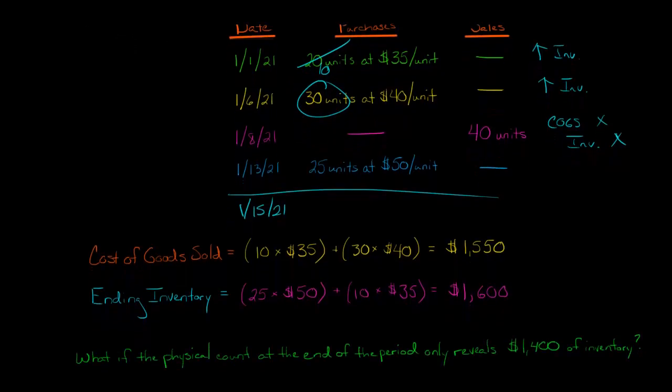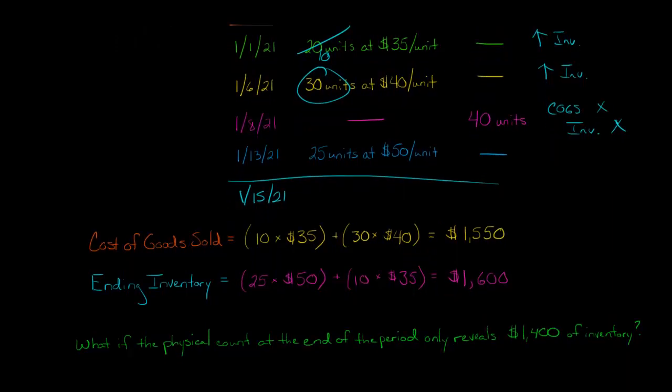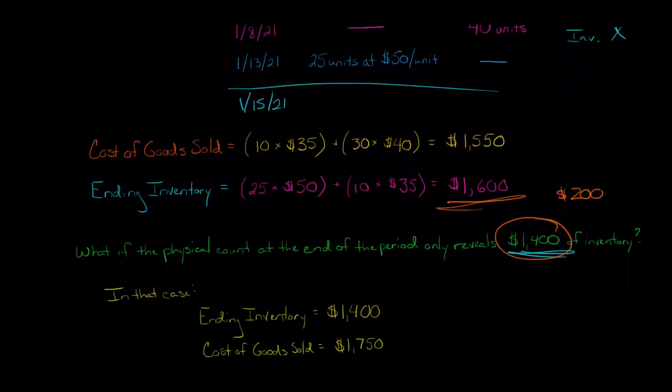So now you might have a question. You might say, well, what if we do a physical count at the end of this reporting period and we do the physical count and it only shows $1,400 of inventory? Right. We can't maybe some inventory was stolen or become damaged or we just lost it or something like that. So we only have $1,400 of inventory. Then if that were the case, then clearly our ending inventory would be overstated by $200. And so what we would do, companies do a couple of things that the theoretically correct way to do it would be to increase the cost of goods sold from $1,550 to $1,750, to increase it by $200. And then obviously our ending inventory would be $1,400 because we're saying we did a count and that was what the inventory was at.